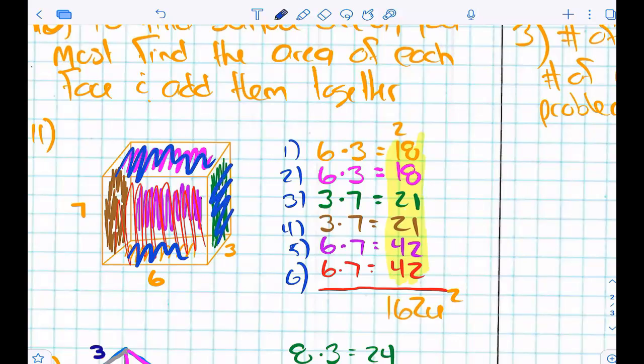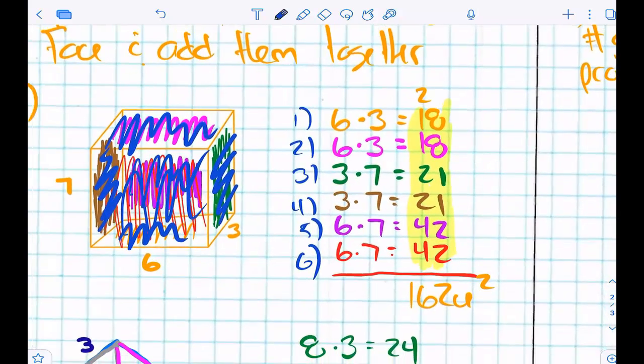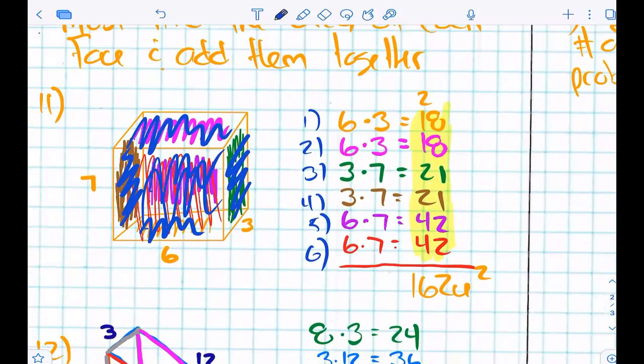This is the face on the side. This is the face on the other side. We have the backside face and the front side face. We find the area of all of those faces, add them together, and we have surface area.